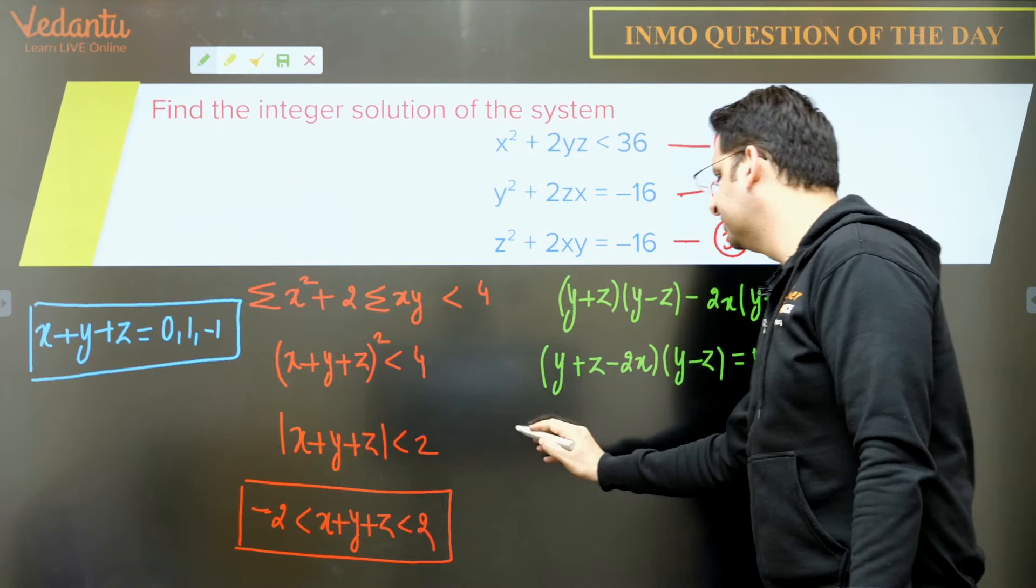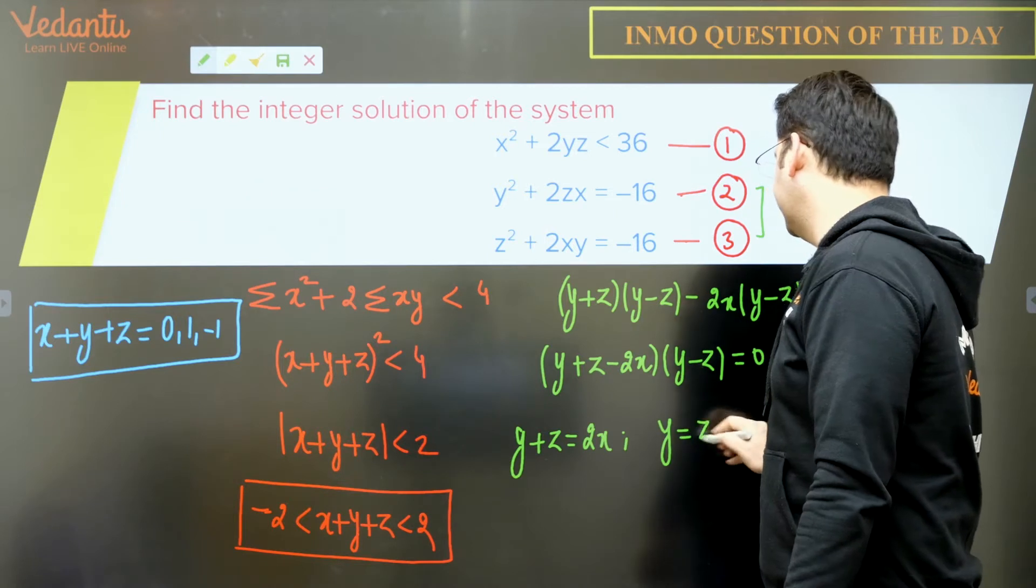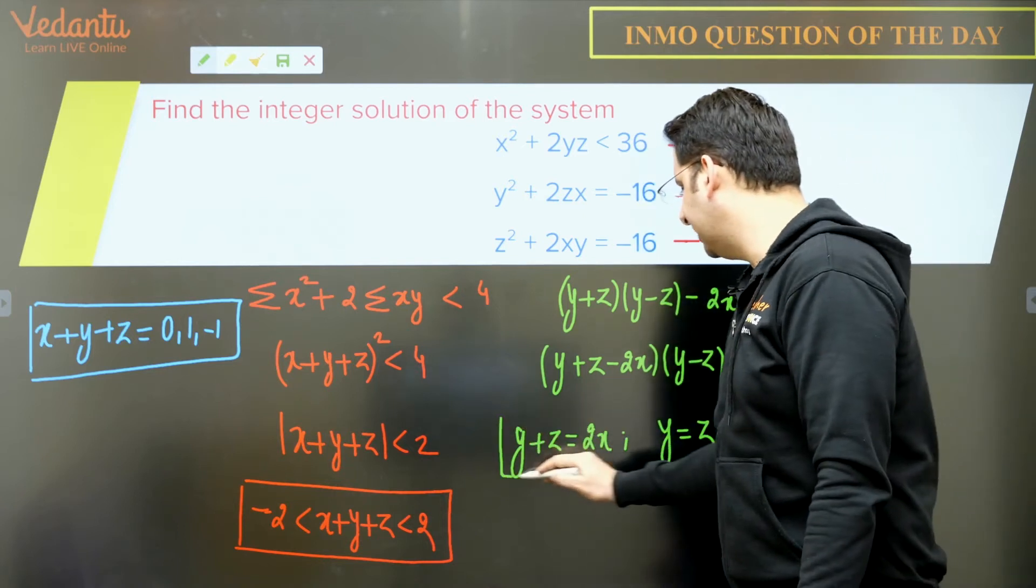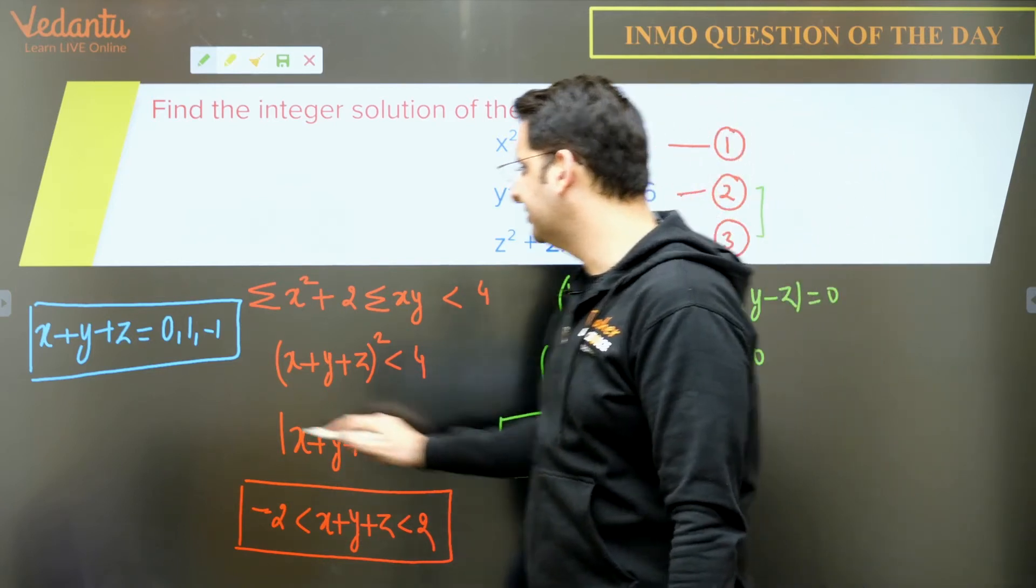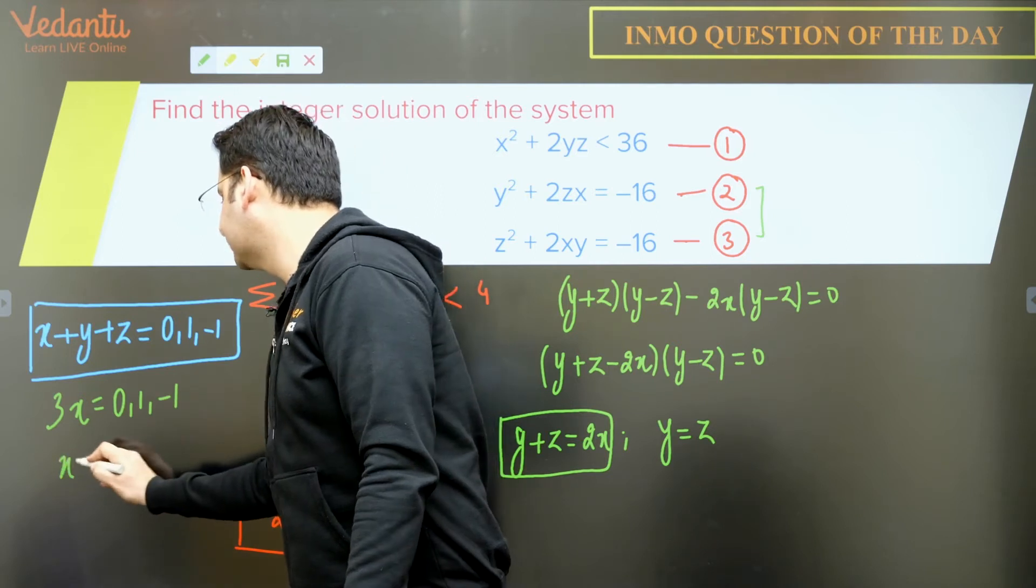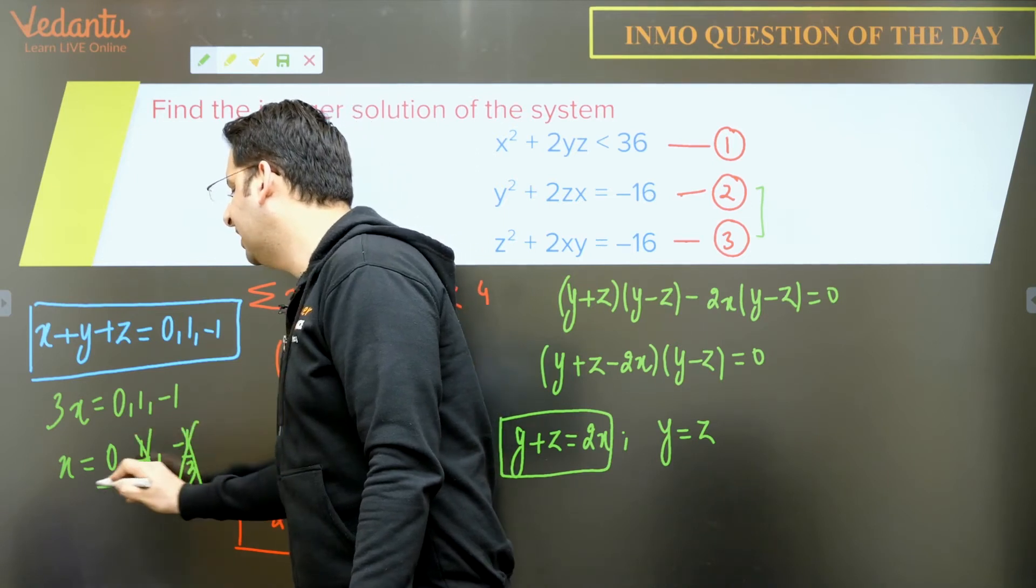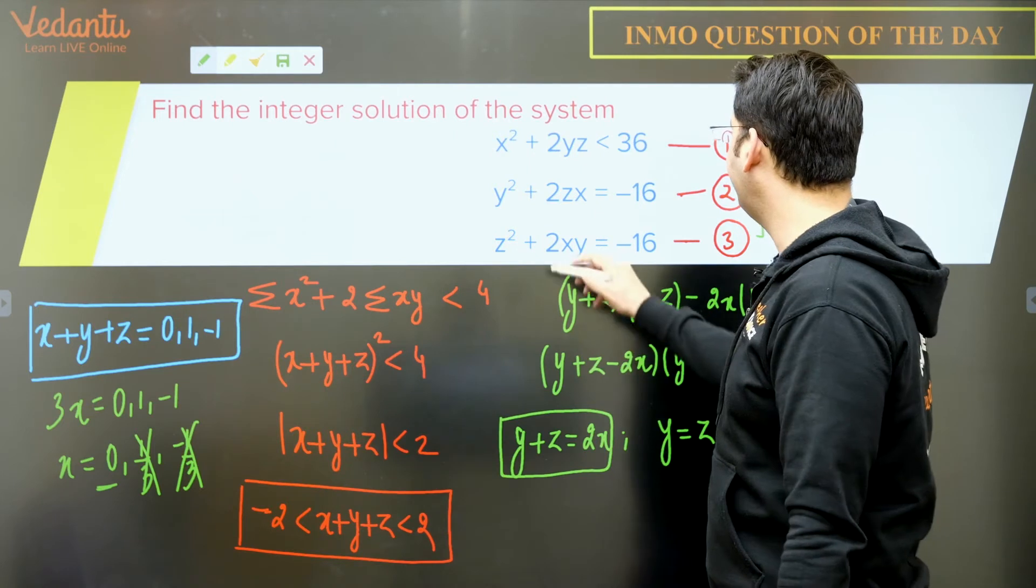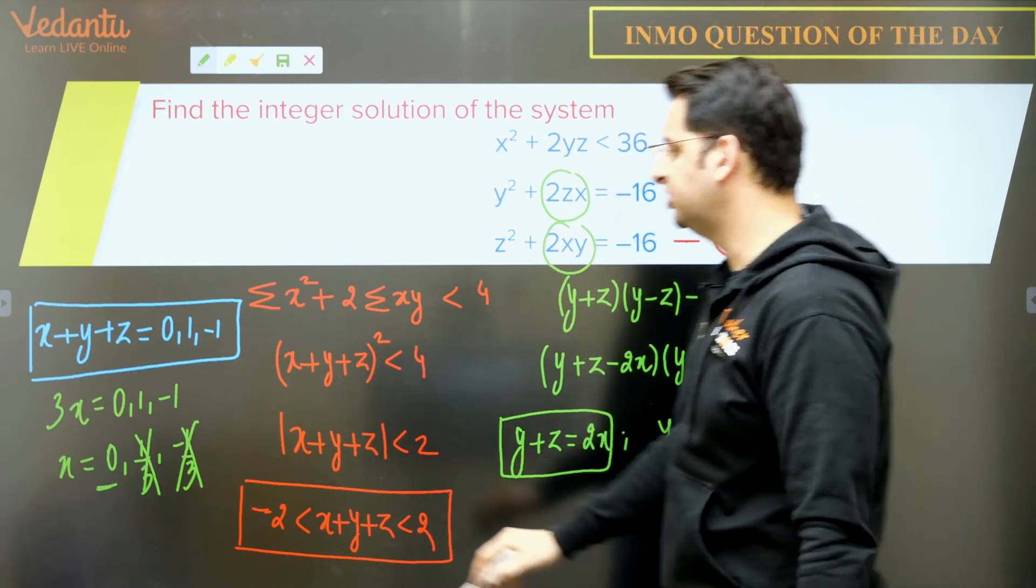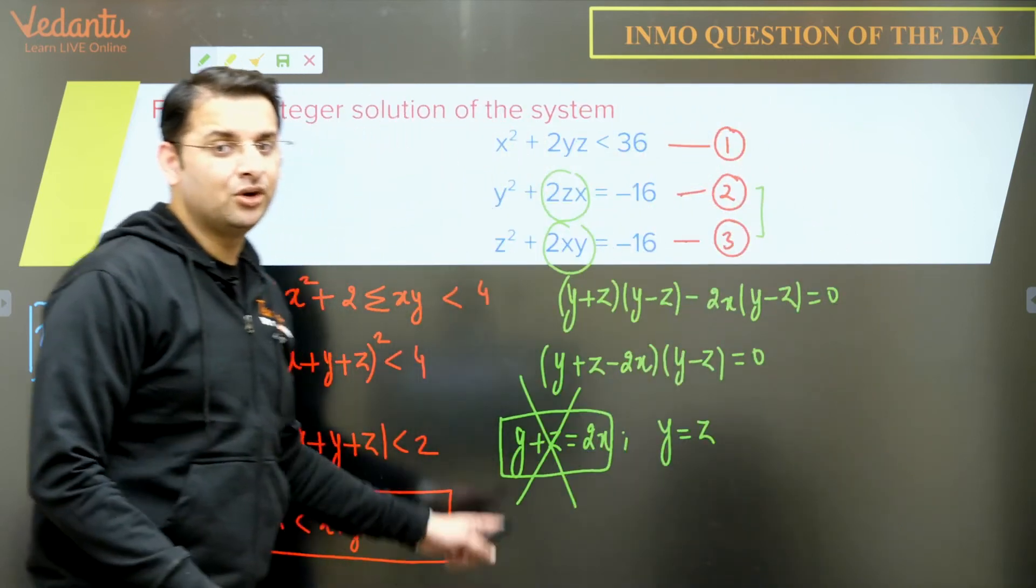So we get two possibilities here. So either y + z = 2x or y = z. So which of these two we have to think upon? So y + z = 2x. Now, if y + z is 2x and if I put this in this particular equation, I'll get 3x as 0, 1 or -1. So x will be 0, 1/3 and -1/3. So these two are definitely not possible. And if x is equal to 0, if I put x = 0 here, I get y² = -16. Or here I get z² = -16 which is not possible. So this is also not possible. That means this does not hold true.